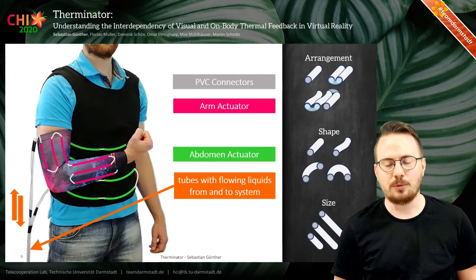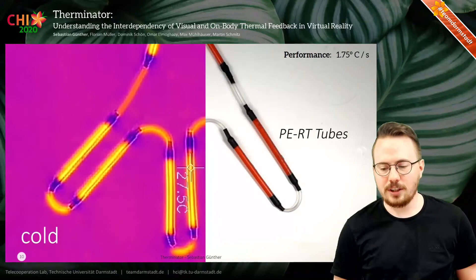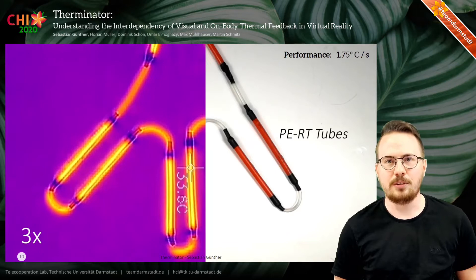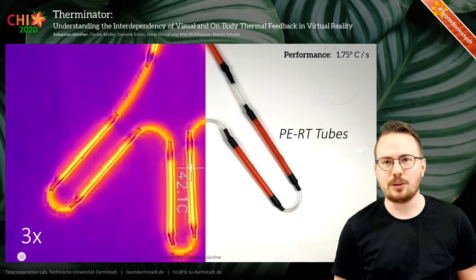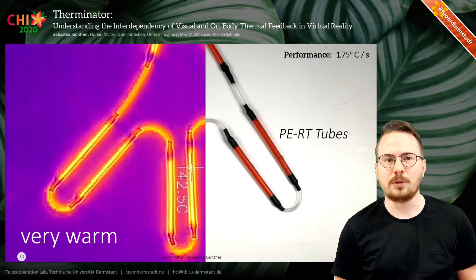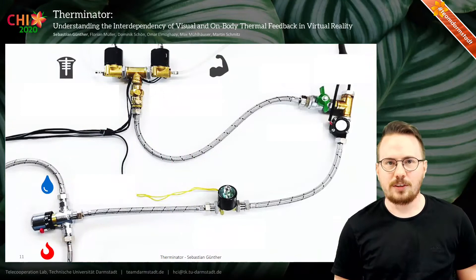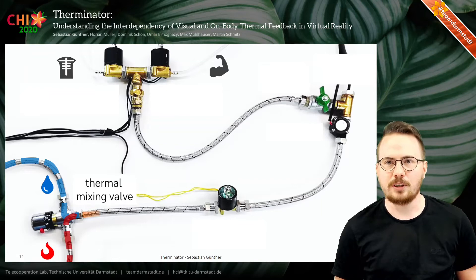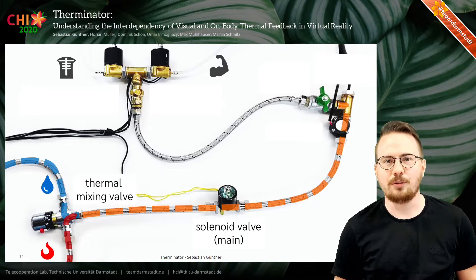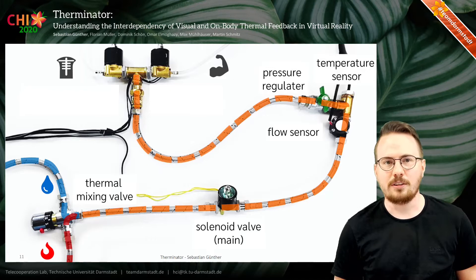So, how does it look like? As you can see here, we have the PERT tubes in red, which are connected by very flexible transparent PVC tubes. In the current prototype, we use a flow rate of about 40 milliliters per second, which resulted in a temperature change of around 2 degrees per second, as visible in the thermal camera view on the left. For changing the temperature of each actuator, we mix a hot and cold water source using a thermal mixing valve. An electromagnetic solenoid valve is used to control the actuation. We then measure the flow rate and inner temperature of the liquid and are able to adjust the flow rates through a pressure regulator. The liquid then reaches two additional magnetic valves, which control the flow to the abdomen and arm actuators.